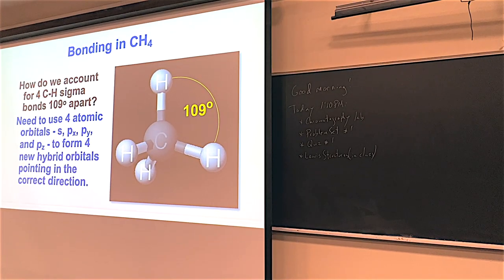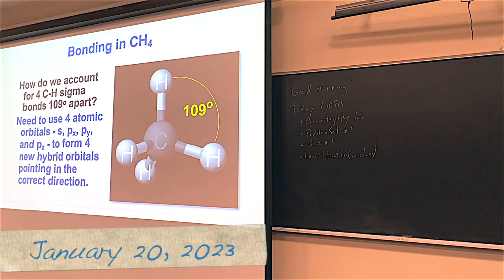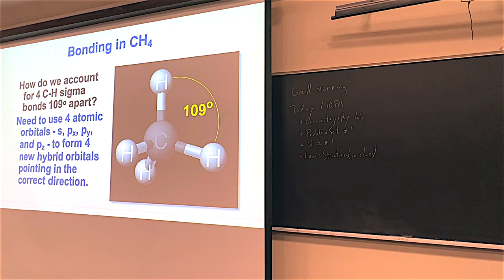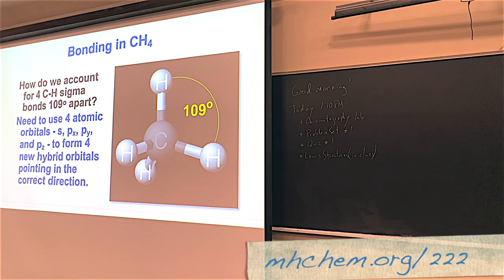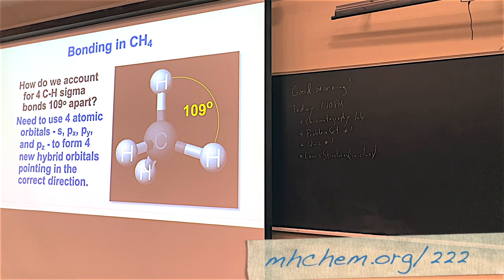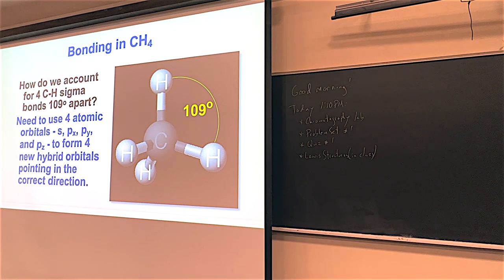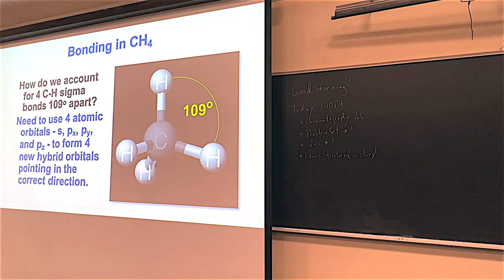Today, for those of you in section 01, we'll meet at 1:10 p.m. at 2501. You'll turn in the chromatography lab. Problem set number one, we'll talk about before you turn it in. Clues number one will be over the stuff from problem set one. And then we'll start the Lewis structures in-class lab, which is just a lab to give us more experience doing Lewis structures and related topics.